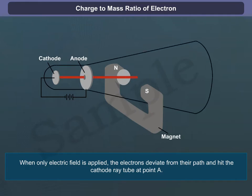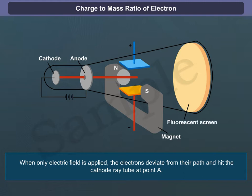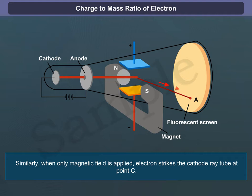When only the electric field is applied, the electrons deviate from their path and hit the cathode ray tube at point A. Similarly, when only the magnetic field is applied, electrons strike the cathode ray tube at point C.